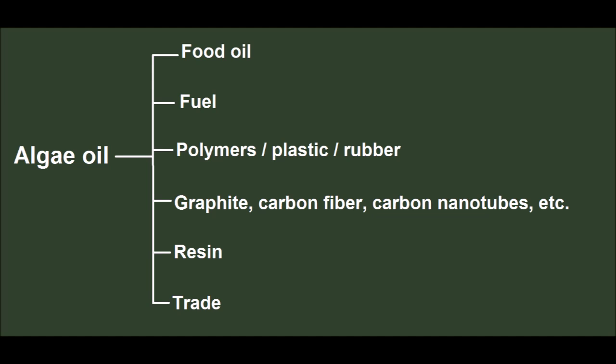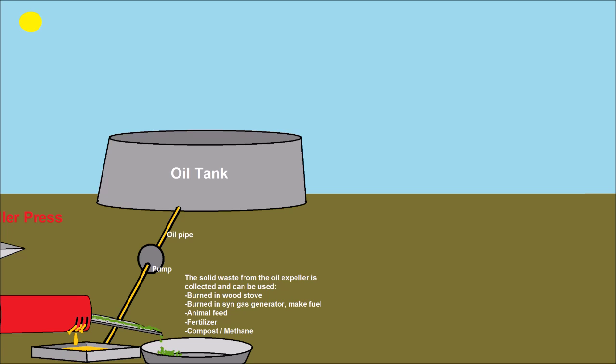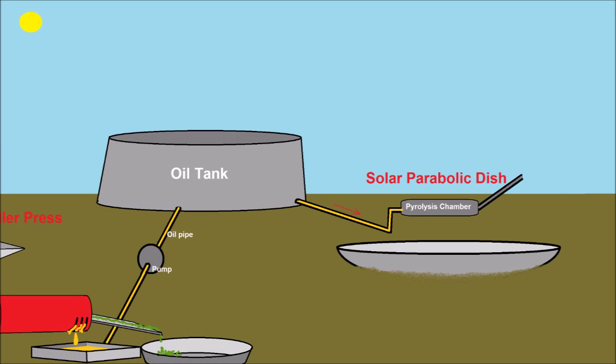Since this video is called unlimited gasoline, I will just stay on that topic. From the oil tank, the oil is pumped into a pyrolysis chamber. This is a canister that's heated to high temperature. The pyrolysis chamber can be heated by sunlight or a burner.